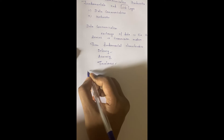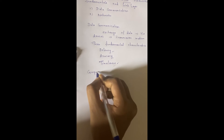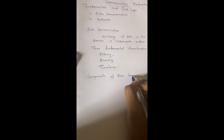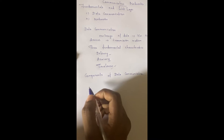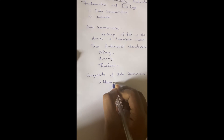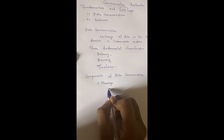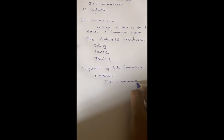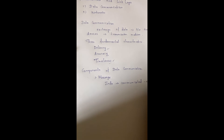Next we are going to see components of data communication. In components of data communication we are having five components. The first one is message — message is just the information to be communicated with each other.